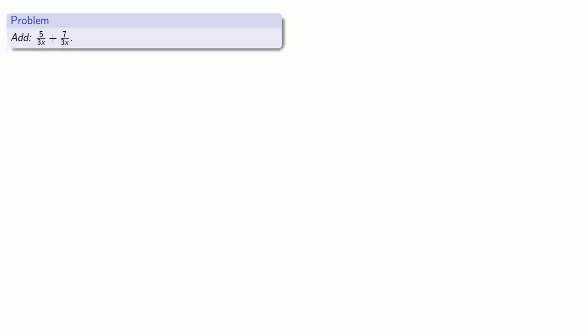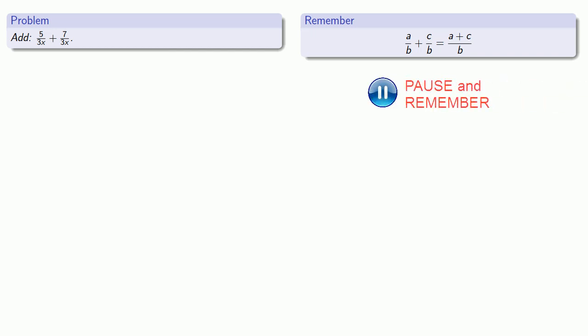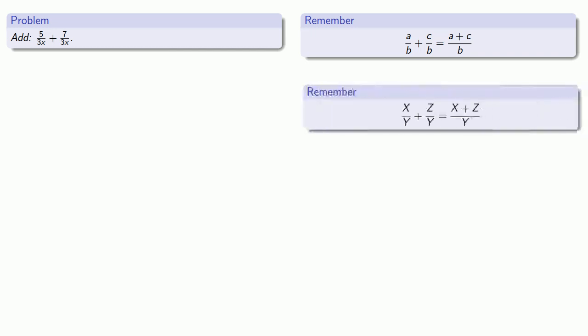What about adding two rational expressions? 5 over 3x plus 7 over 3x. So again, it helps to remember what we did when we had fractions. Our fraction, a over b plus c over b. As long as the denominator was the same, we could add them by adding the numerators and keeping the same denominator. Again, the radical difference made by switching to polynomials is, well, nothing really. If we're adding two rational expressions, x over y plus z over y, as long as our denominators are the same, we can add the numerators, x plus z, and keep the same denominator.